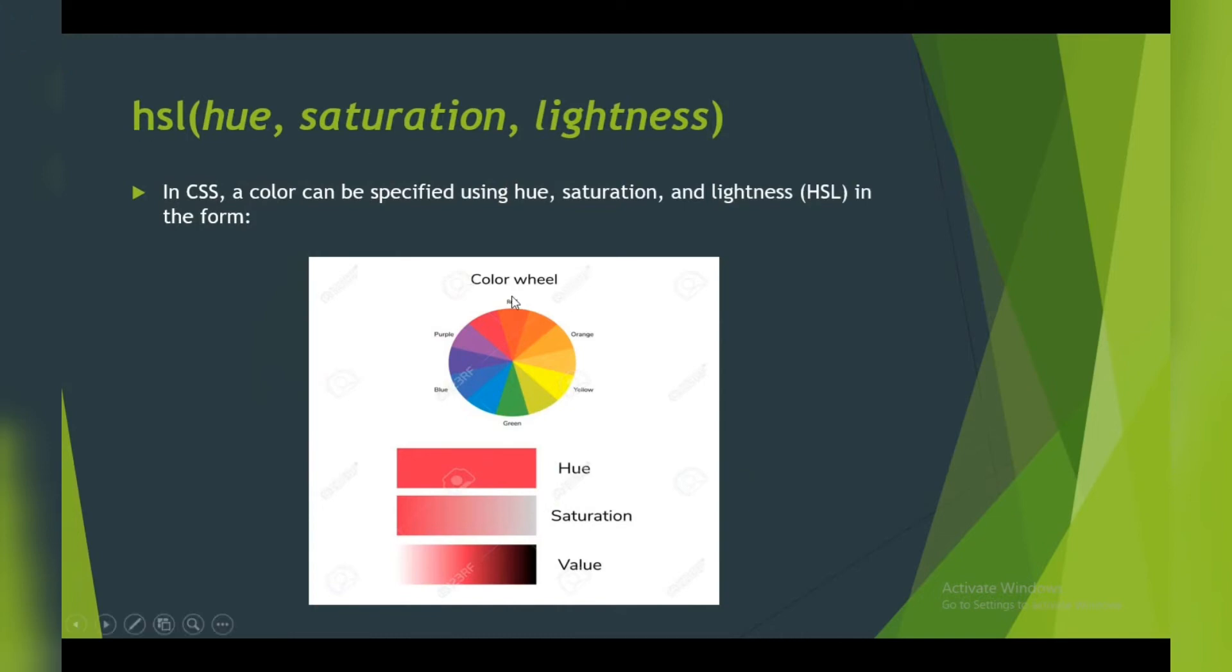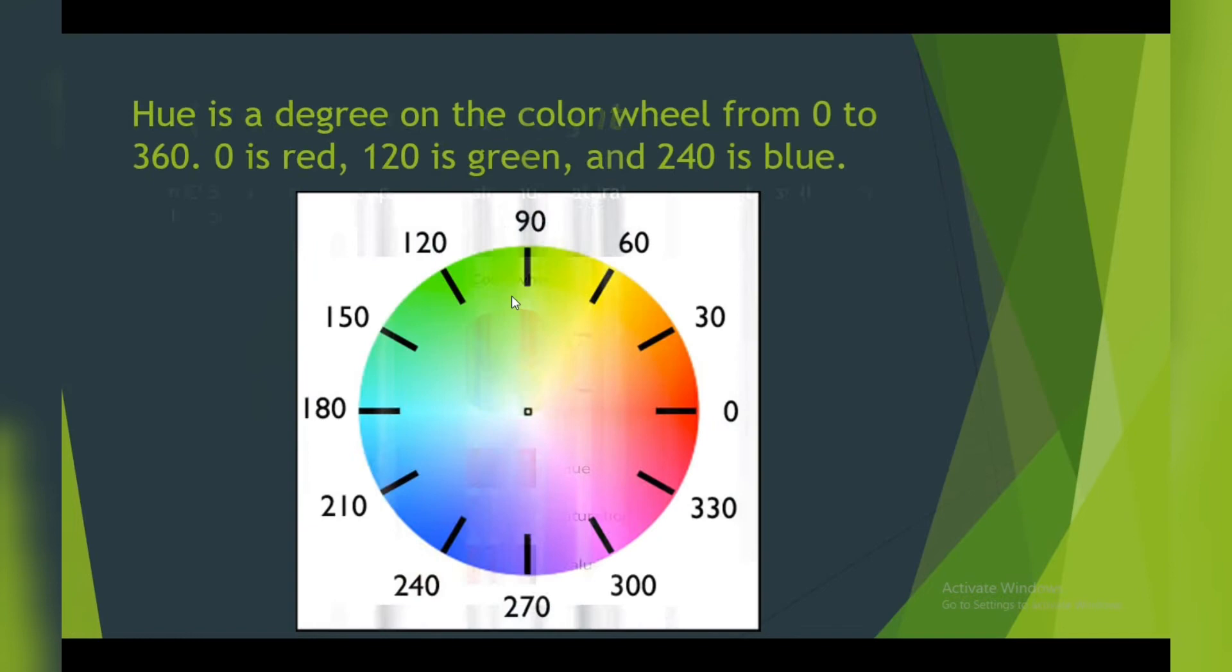First, we are going to see about the hue. Hue is the degrees on the color wheel from 0 to 360 degrees. So the complete circle is 360. This is the wheel.